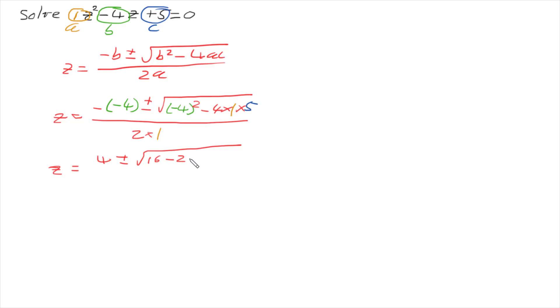And then working out the square root, we have the square root of 16 take 20 is negative 4 over 2.